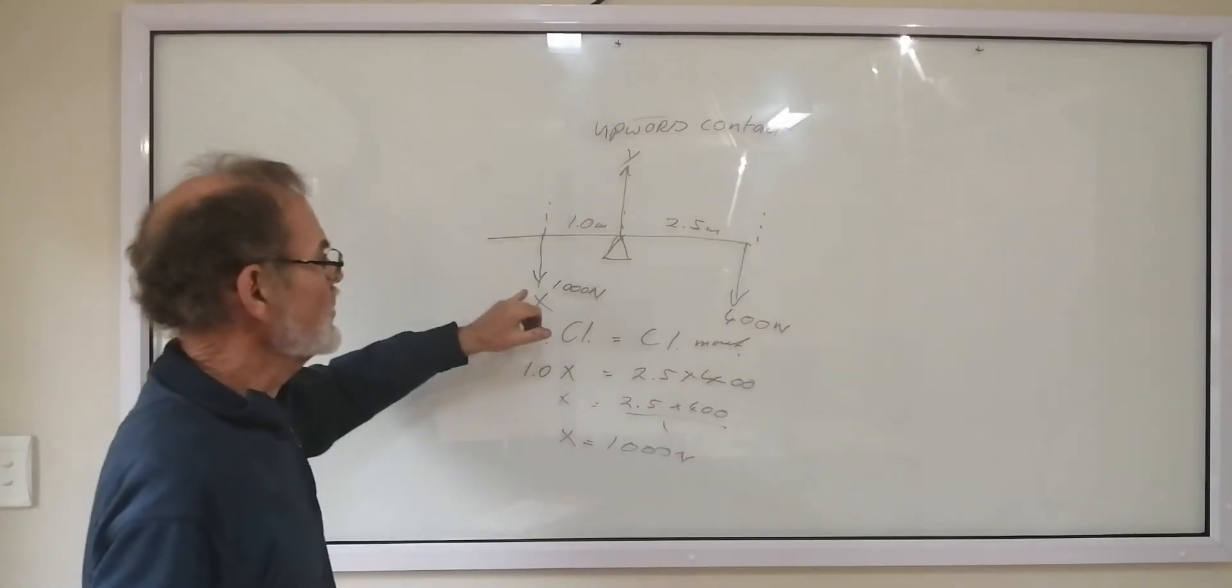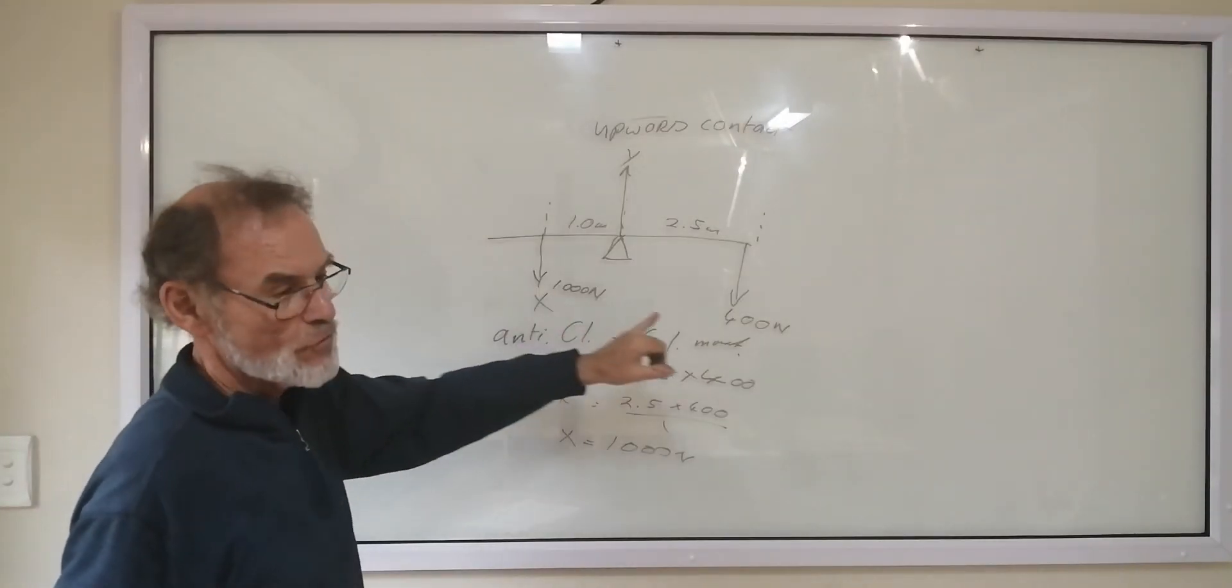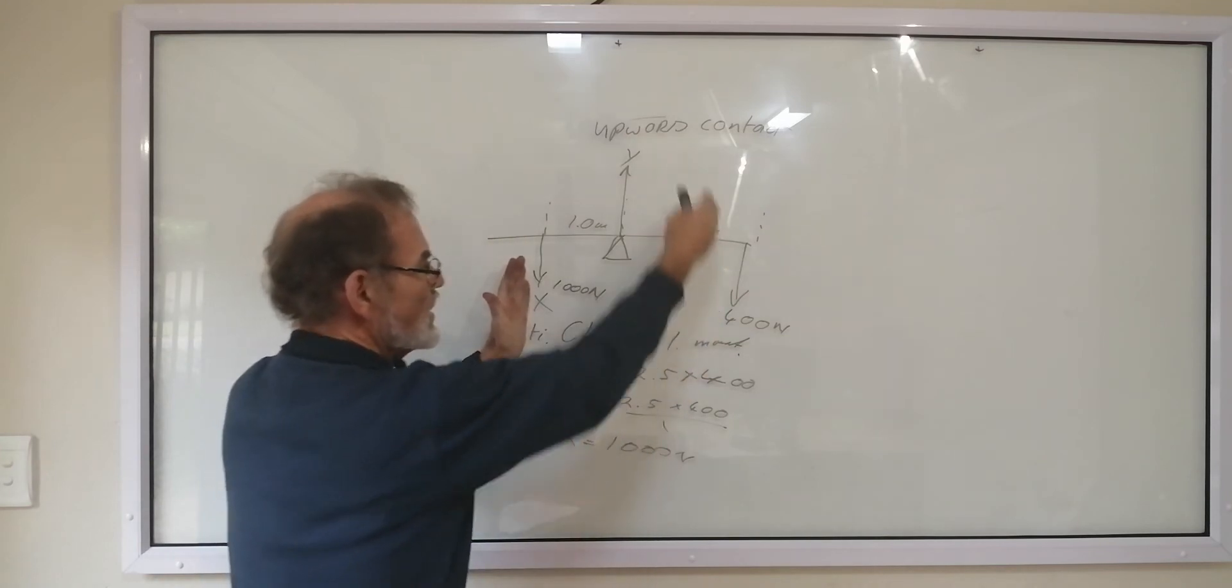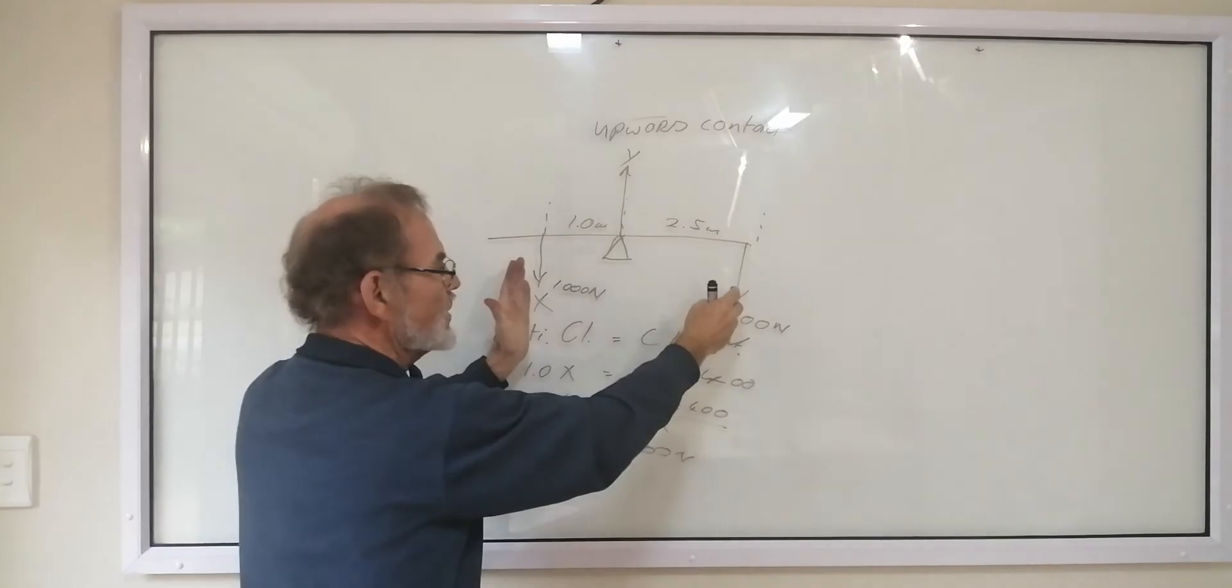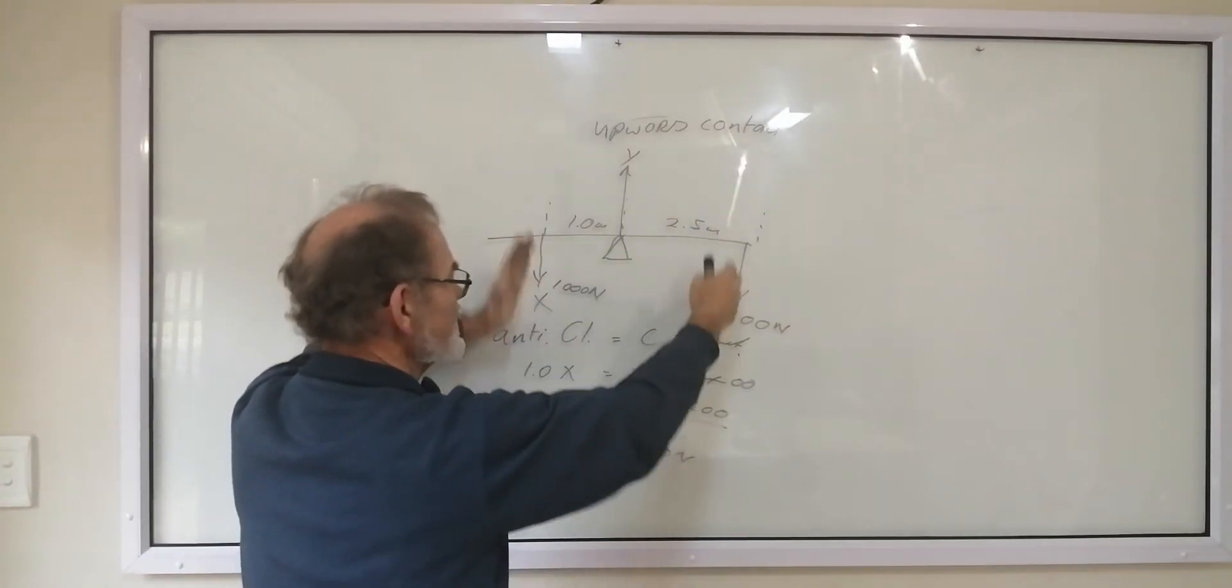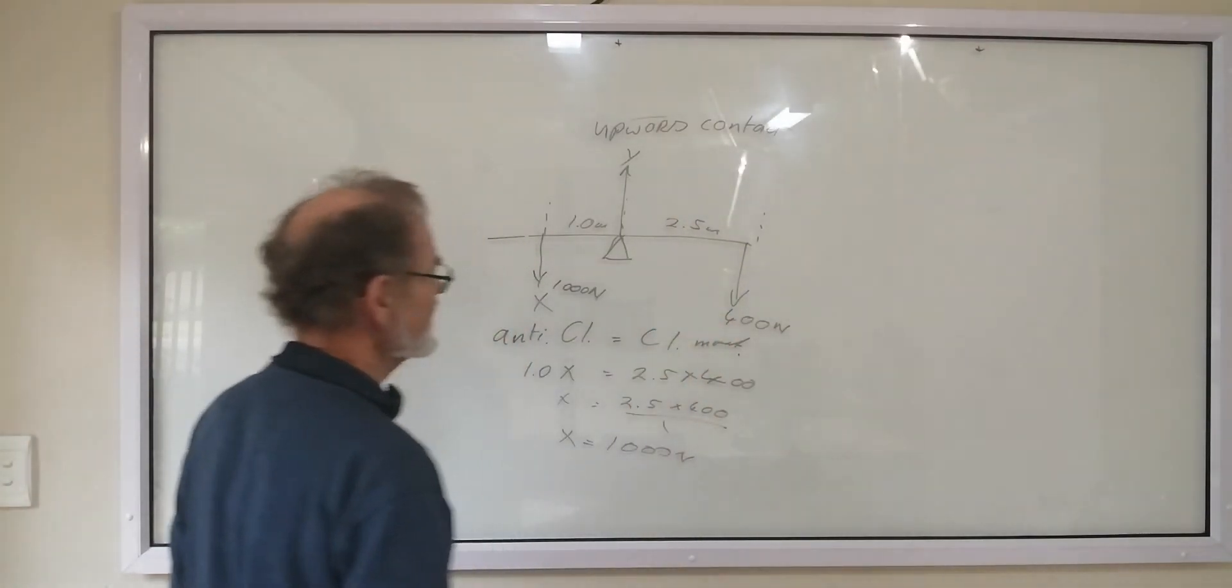So this is a force here of 1000 newtons. Now we know what the total downward force on the spin is. It's 1000 newtons and 400 newtons. And it's in equilibrium. So these two are pressing down in the same direction. Because this thing's not turning because it's in equilibrium. It's balanced.